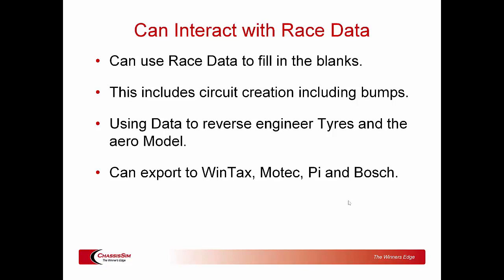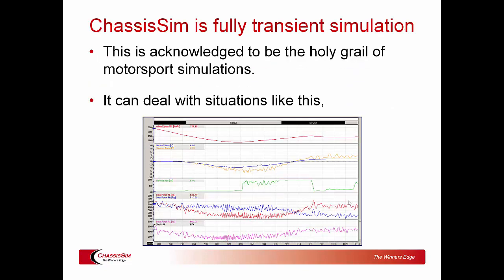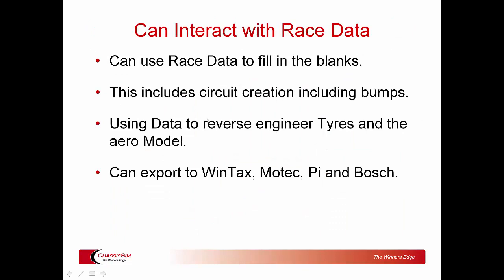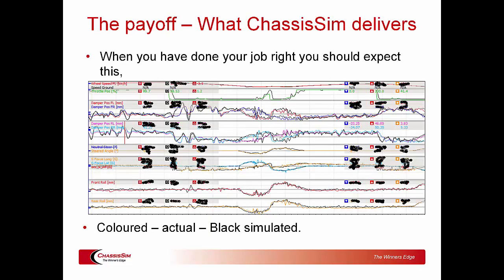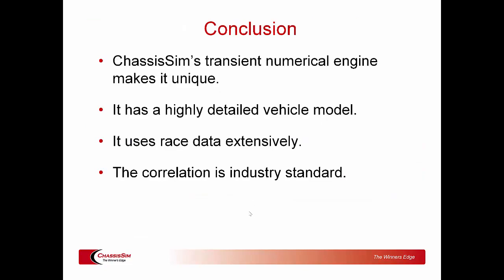Any of these capabilities on their own would be valuable, but that one-two-three punch — the transient simulation combined with the ability to use race data to fill in the blanks, and export to a data acquisition package of your choice — gives ChassisSim a very powerful combined capability. That ultimately allows ChassisSim to achieve correlation like this: actual data is colored, simulated is black — speed, throttle, front dampers, rear dampers, steer angle, lateral g, longitudinal g, front and rear roll. This is the ultimate proof of the pudding of that one-two-three punch, and it really illustrates what ChassisSim brings to the party.